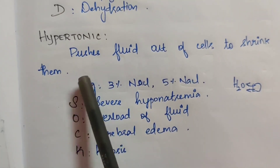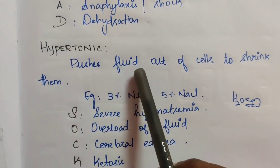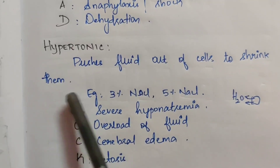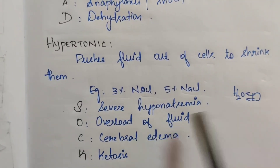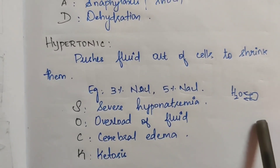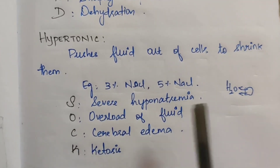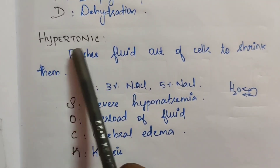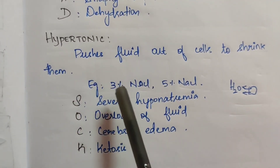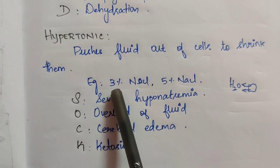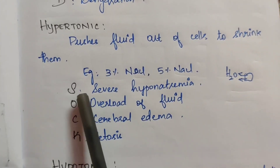Hypertonic solution pushes fluid out of cells to shrink them — that is, it addresses fluid volume overload. Fluid is drawn out of cells. Examples of hypertonic solutions include 3% NaCl and 5% NaCl.